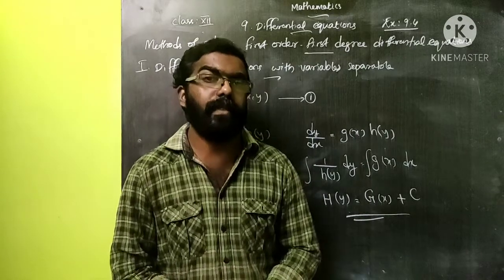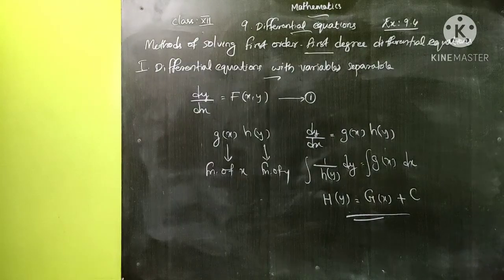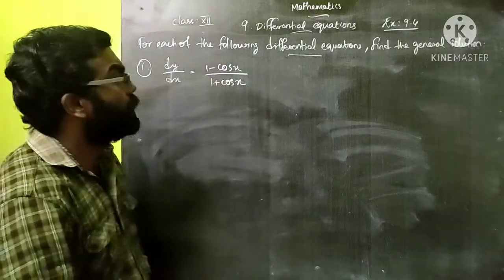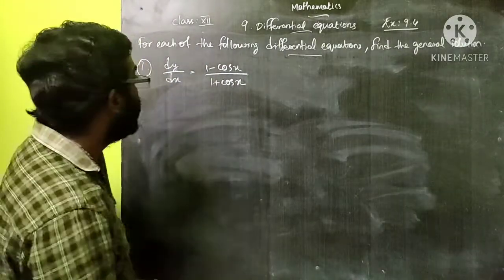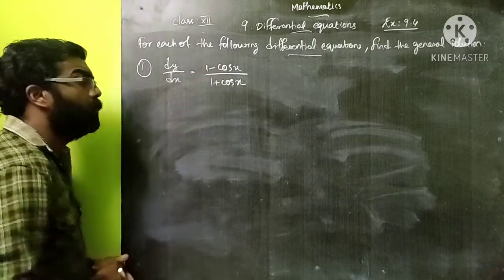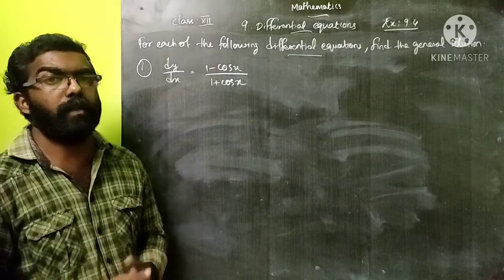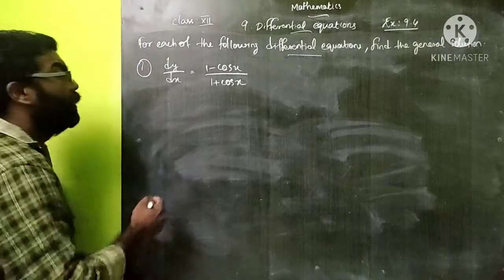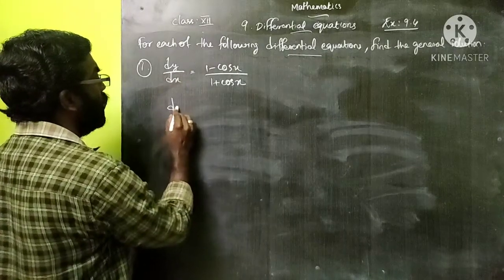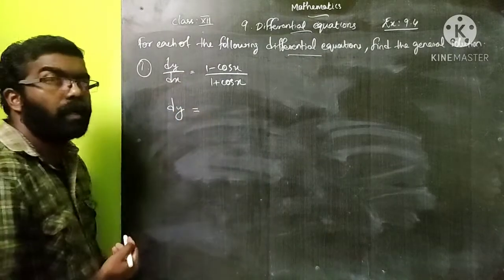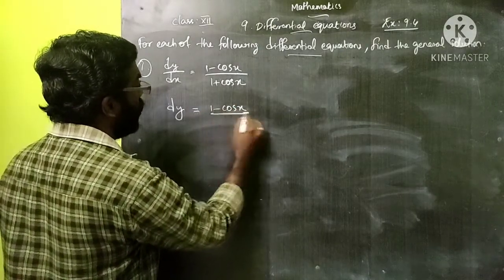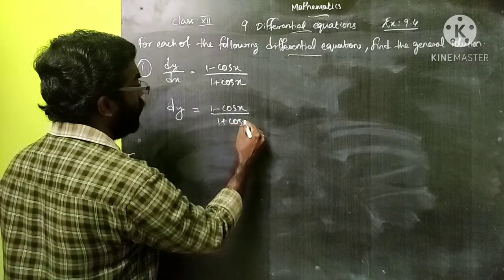Now we shall discuss the problems from Exercise 9.4. The question is: for each of the following differential equations, find the general solution. The first one is dy/dx = (1 - cos x)/(1 + cos x). First we can separate the variables. The terms involving y is dy only, so we write dy = (1 - cos x)/(1 + cos x) dx.